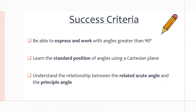Let's go over the success criteria for this lesson. We want to be able to express angles that are over 90 degrees in a format called standard position using a Cartesian plane, and be able to work with these angles to solve problems. We also want to learn the relationship between the related acute angle and the principal angle — these terms might be somewhat foreign to you, but we will go through everything in these slides.